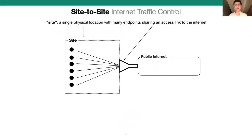So what do I mean by that? By a site, I'm broadly referring to any single physical location where there are many endpoints sharing the same access link to the internet. Some common examples would be a university campus network like MIT, a company office network, or even a particular data center from a cloud provider like Amazon's US West data center.